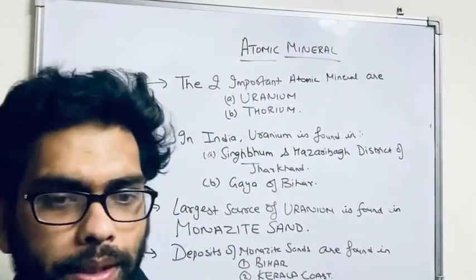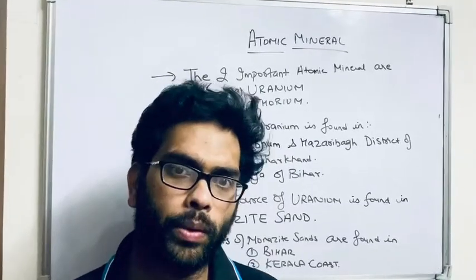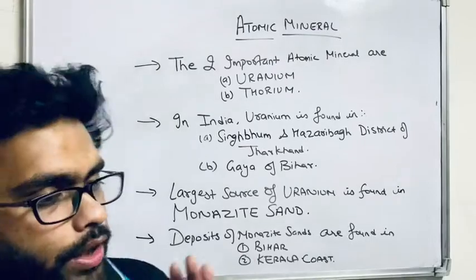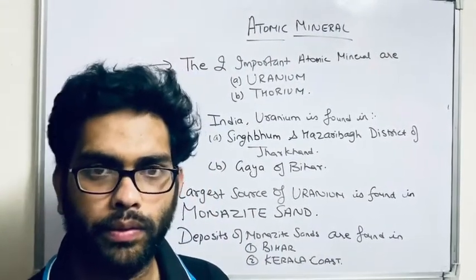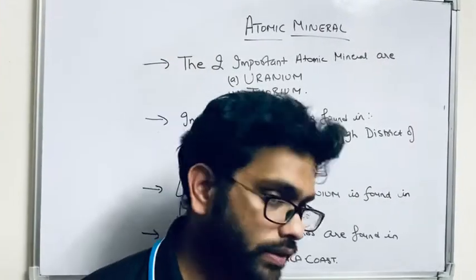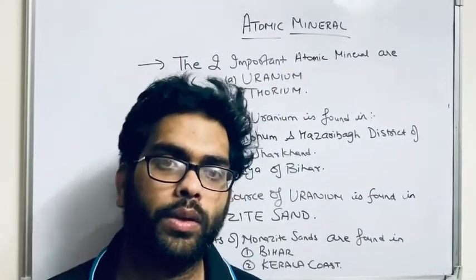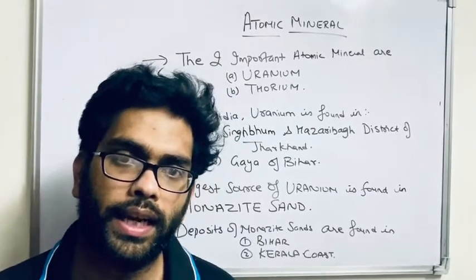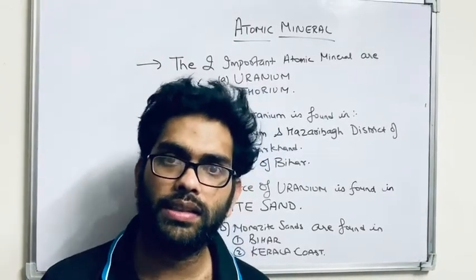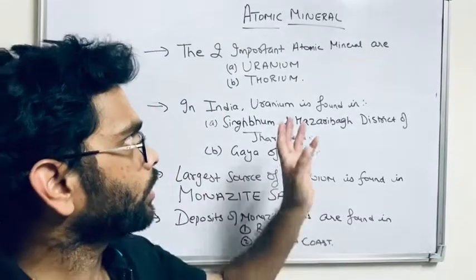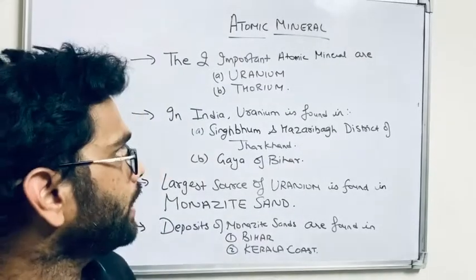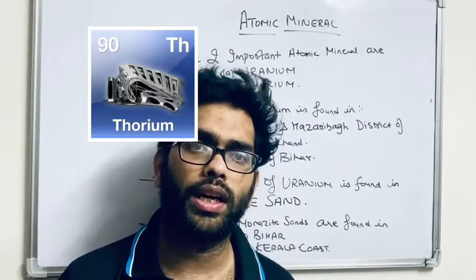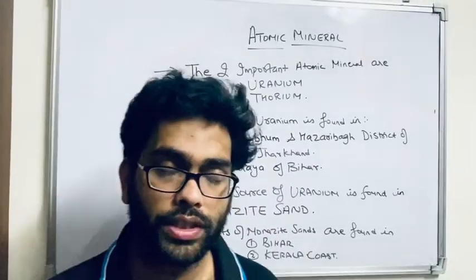We have discussed the three important energy resources: coal, petroleum, and natural gas. Now in this lecture we are going to discuss one of the most important energy resources called atomic mineral resource, also known as nuclear energy resource. Minerals that show the property of nuclear energy are known as atomic minerals. We have three major types: uranium, thorium, and plutonium — but uranium and thorium are the two most important ones used for generating energy.